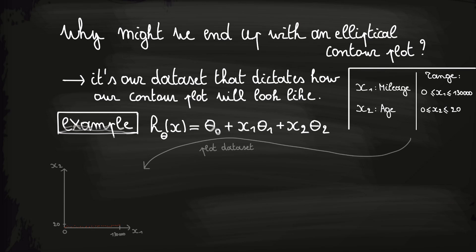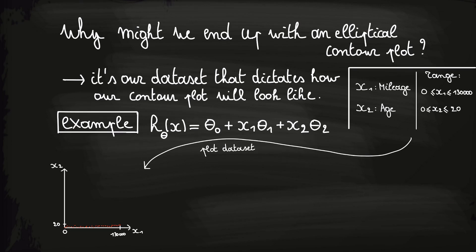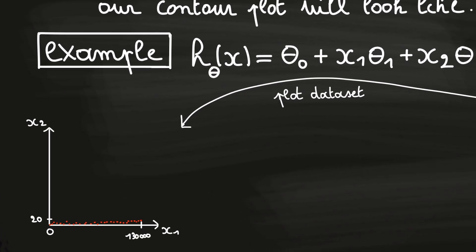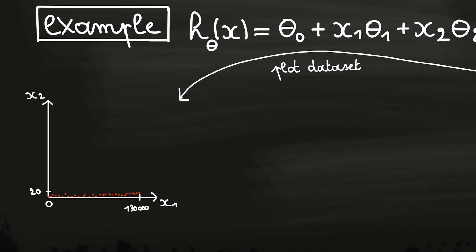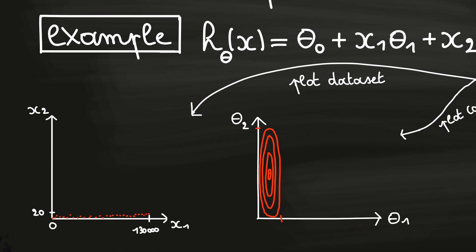If we plot this dataset, it will look as follows. And if we now plot the cost in function of the parameters theta1 and theta2, also called the contour plot, we might see a figure like this one on the right. As you see, this is very elliptical. This is because a large range for a feature will typically result in a small range for the corresponding parameter, and a small range for a feature will typically result in a large range for the corresponding parameter.